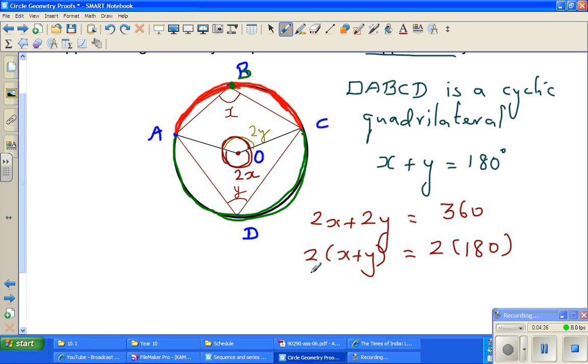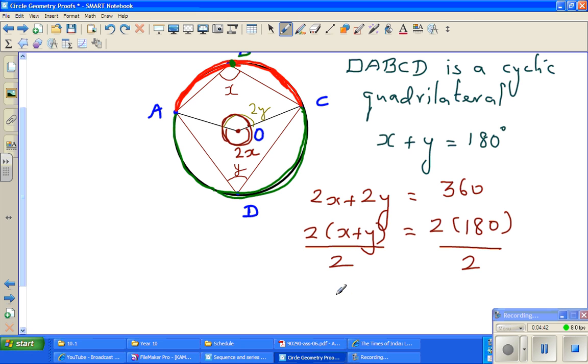If you divide both sides by 2, what do we get? X plus Y equals 180 degrees. And that's what we wanted to prove: that opposite angles of a cyclic quadrilateral are 180 degrees. See you in the next video.